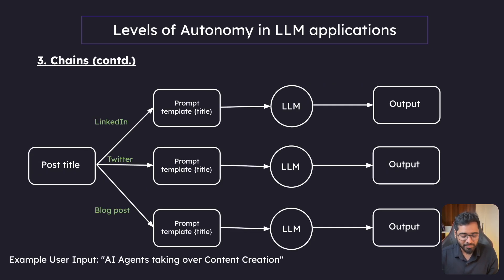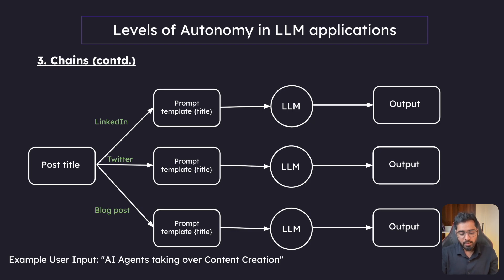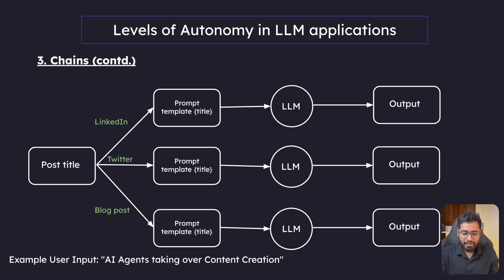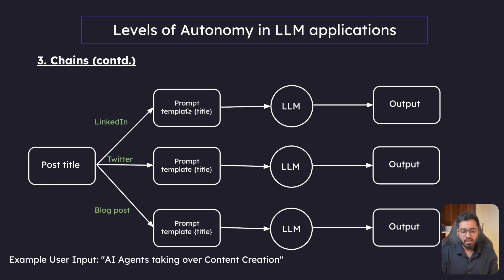Let's look at an example of chains. The user input is just a title — for example, 'AI agents taking over content creation.' The user wants the application to create a LinkedIn post, a Twitter post, and a blog post based on this topic. So we have a chain for LinkedIn, a chain for Twitter, and a chain for blog posts — parallel chains that all start executing at the same time when initiated. These are three different LLM calls: three specialists, one doing LinkedIn, one doing Twitter, one doing the blog post.